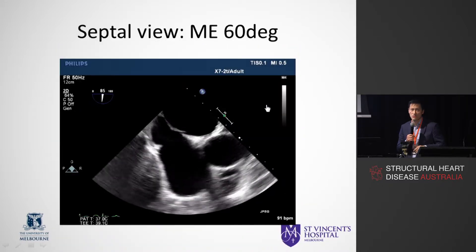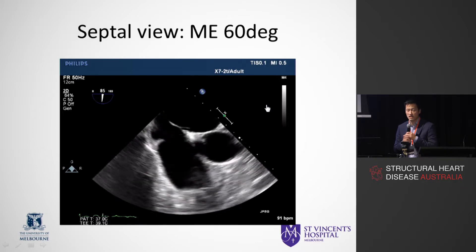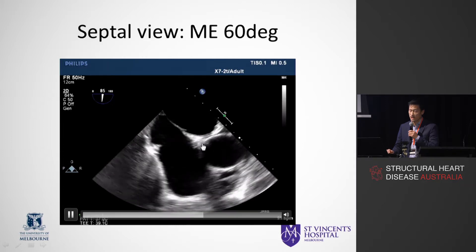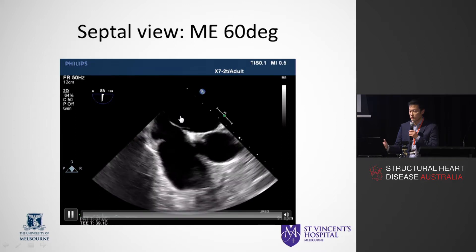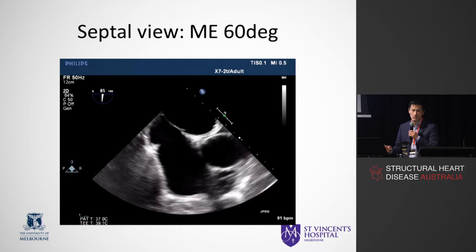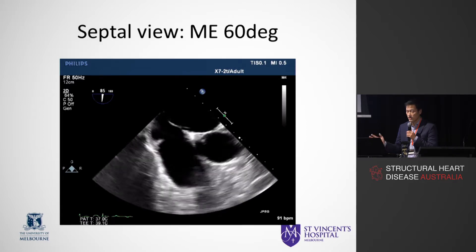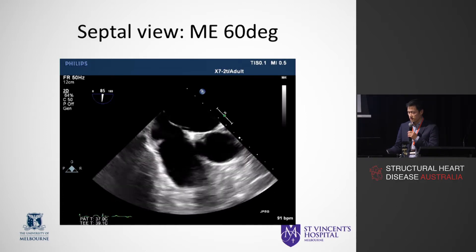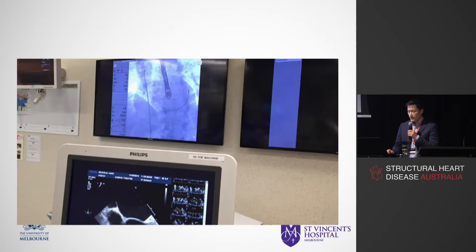This is the main view for guiding the septal puncture — slightly upper mid-oesophageal at around 60 to 90 degrees. What you want to see is the aortic valve in view, the intra-atrial septum — the thin bit and the thick bit — and also the posterior part. This is important because you can see the catheter engaging with the septum and the structures you want to avoid: the aortic valve, the aorta, and posteriorly the posterior part of the left atrium is where you don't want to go. The procedures generally have both fluoroscopic and echo guidance, giving two planes to work with to have confidence of catheter engagement with the septum.